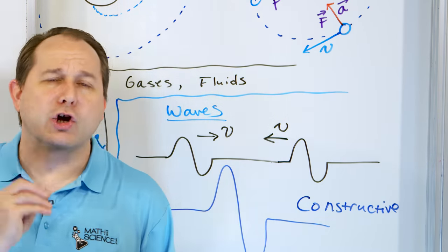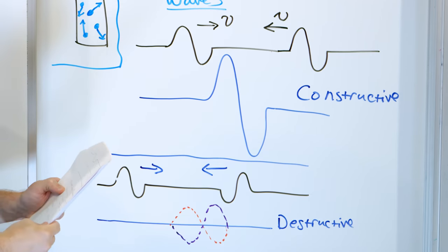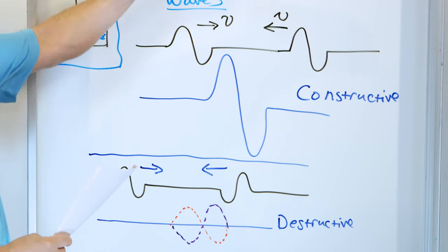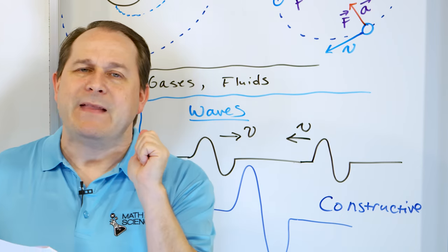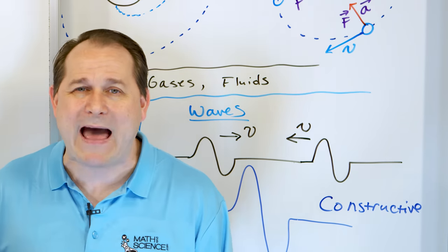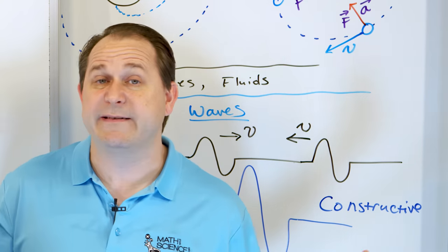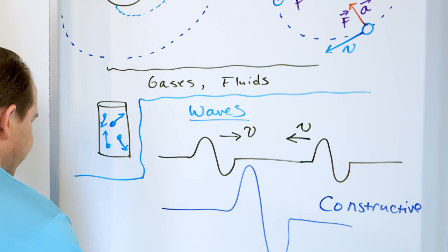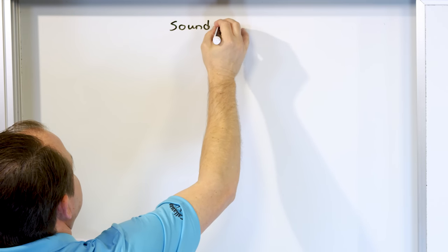These kinds of waves - where you take a piece of string and give it a jiggle and it propagates - are called longitudinal waves. The next thing we typically learn in physics is about sound waves. Sound waves have similar math but the structure of a sound wave is a little different.